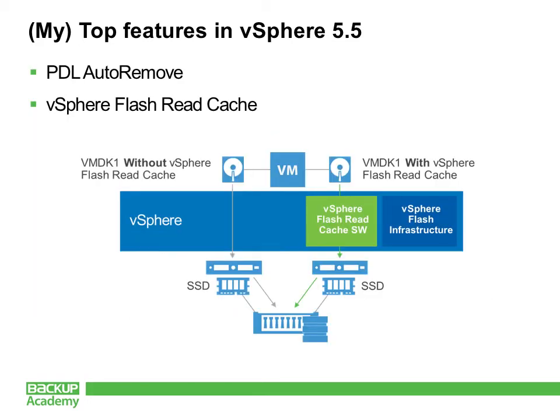I've identified two additional vSphere 5.5 features I really like. The first is PDL Auto-Remove — Permanent Device Loss Auto-Remove — which is in the release notes and many people may glance over. PDL Auto-Remove takes a block storage device out of an ESXi host if it were to truly fail. The correct way to remove storage is to put the host in maintenance mode, evacuate all VMs, then right-click the datastore and delete it. But if a storage device fails, you can't always do it that cleanly. This feature will keep the host from being littered with reconnects to a device that's no longer there — it will simply remove it.